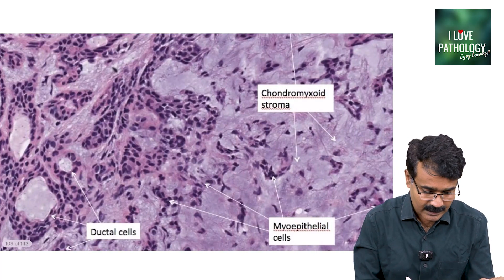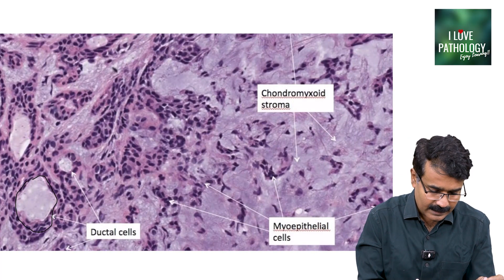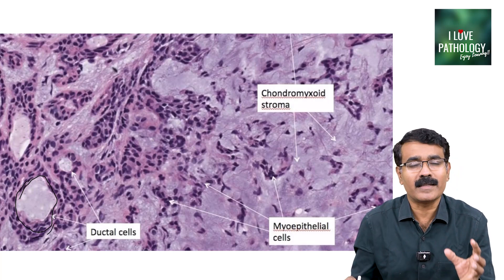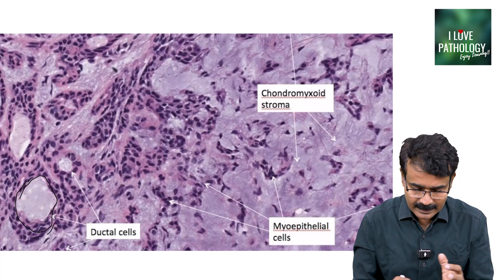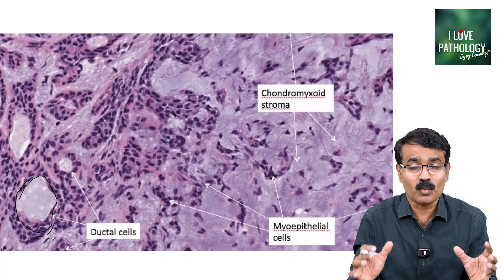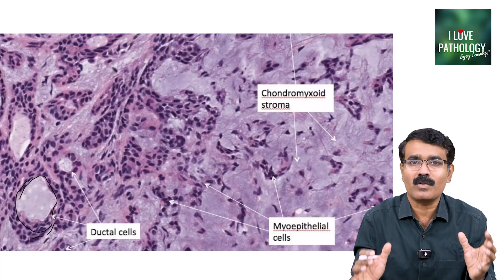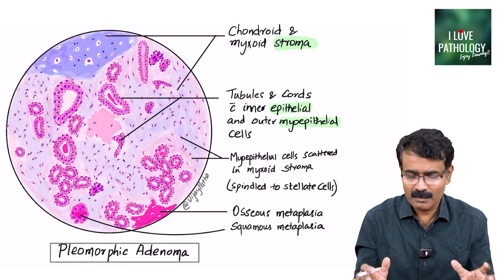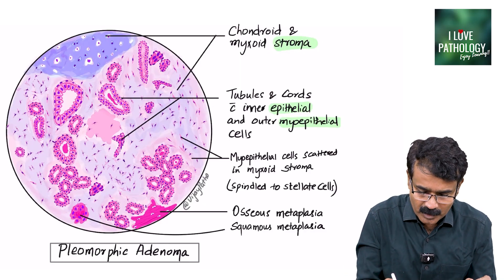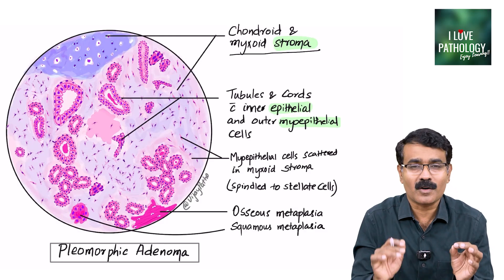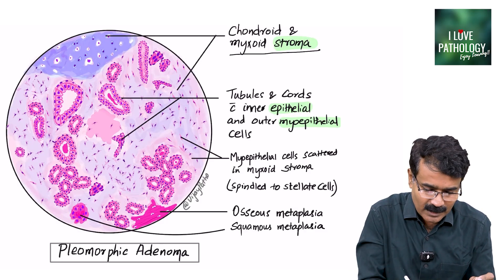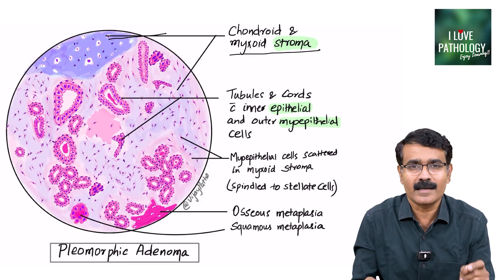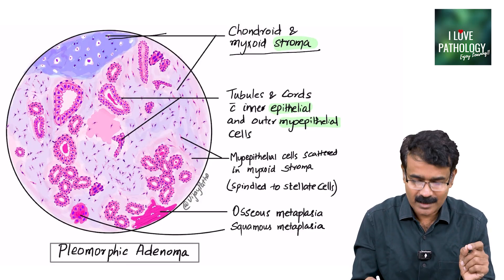What are these epithelial cells? These are basically either the ductal epithelial cells and the surrounding myoepithelial cells, and in between these you find a stroma, which is chondromyxoid stroma. What you have to demonstrate is presence of either chondroid or the myxoid stroma — it should look like a cartilage. It is not a true cartilage; hence, it is referred to as a pseudocartilage.